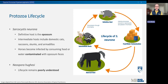S. neurona is a normal parasite of the opossum, which is considered the definitive host. The opossum passes immature life stages of this parasite in its feces — think of these as little eggs — which are then consumed by the intermediate host when foraging on contaminated feed or water. S. neurona undergoes some maturation in the intermediate host's muscle tissue, but cannot complete its full life cycle until it's back inside the opossum. If that intermediate host dies, it's scavenged by the opossum, completing the life cycle. Several intermediate hosts have been identified, including domestic cats, raccoons, armadillos, and skunks.